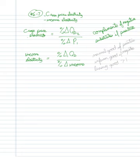And then for the income elasticity of demand, it's a normal good if it's positive, and it's an inferior good if it's negative.